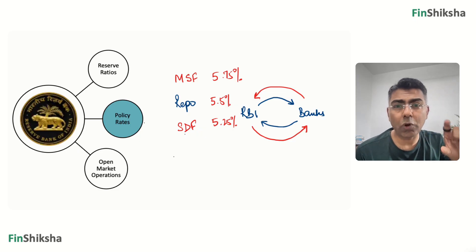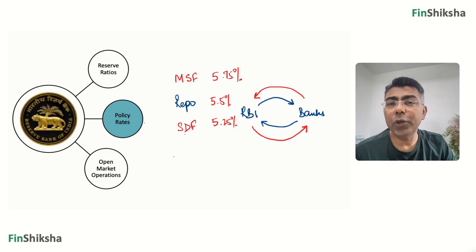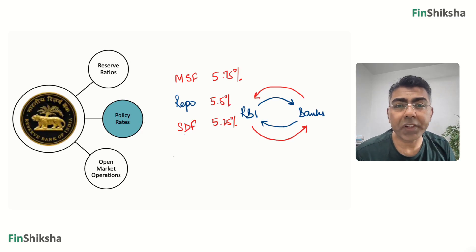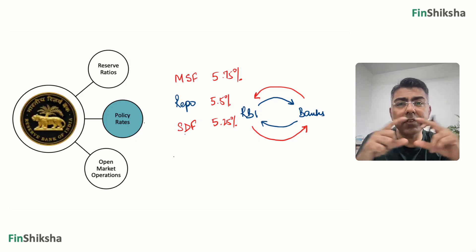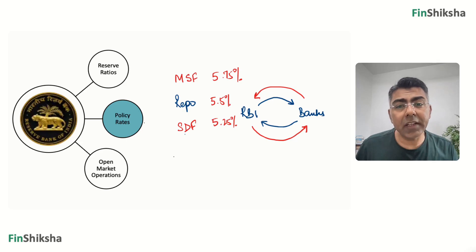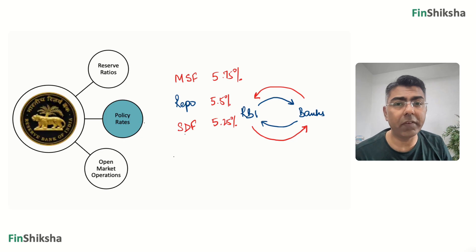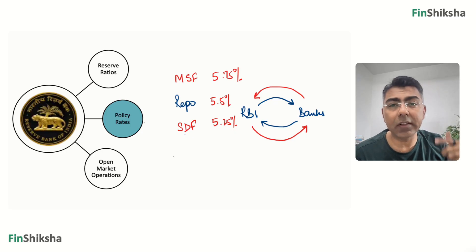The logic of this corridor is that if a bank needs to borrow urgently, it doesn't need to pay more than 5.75% to any entity, because RBI provides money at 5.75. And if a bank has excess money to lend, it won't lend below 5.25%, because RBI pays 5.25 with no questions asked. So system rates stay between 5.25 and 5.75. RBI moves this corridor based on inflation targeting — if inflation is under control, they bring rates down; if inflation spikes, they raise rates, reducing money supply and economic growth.